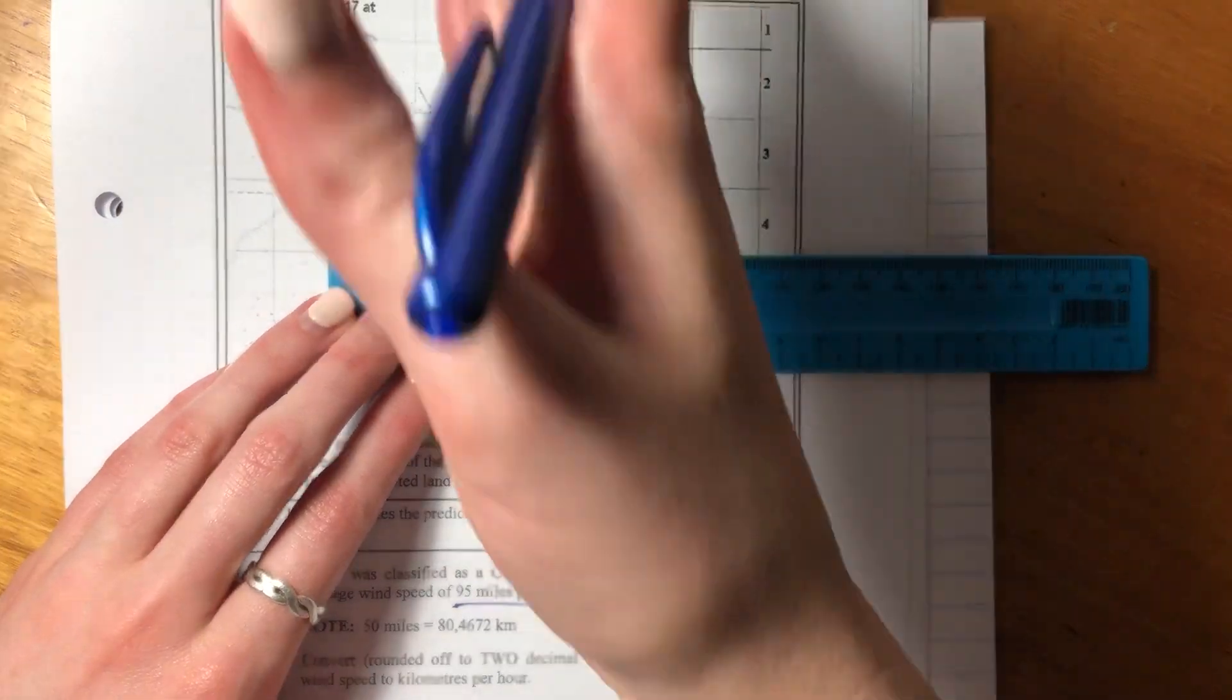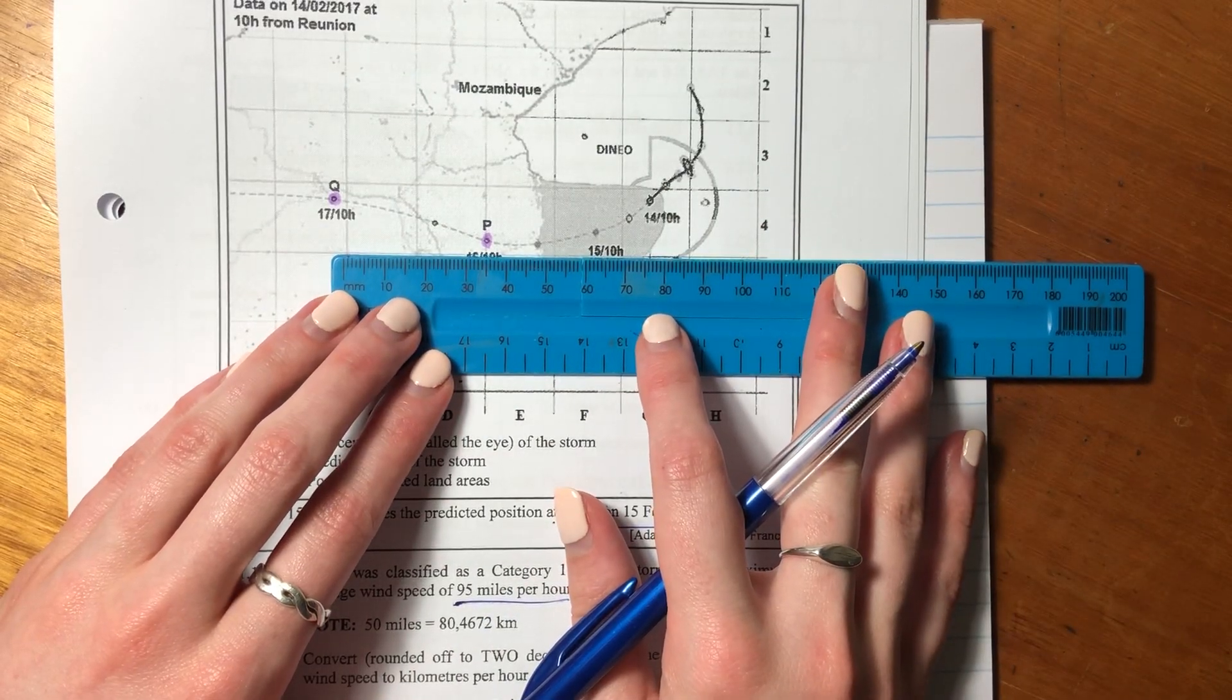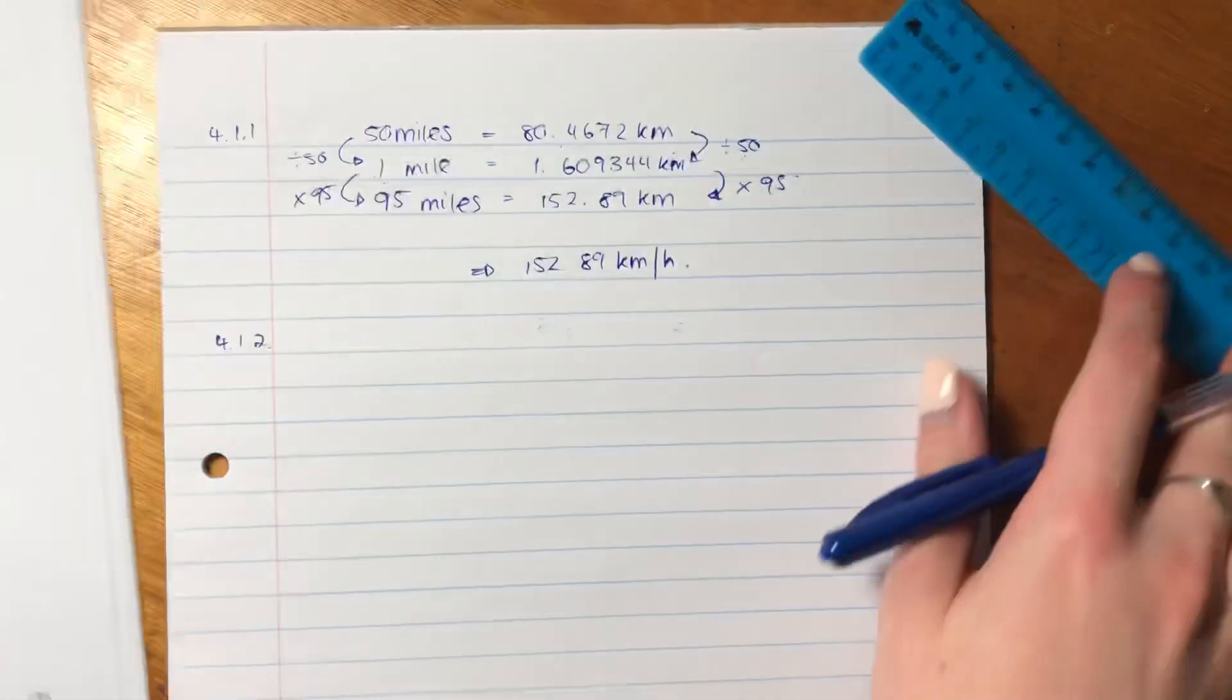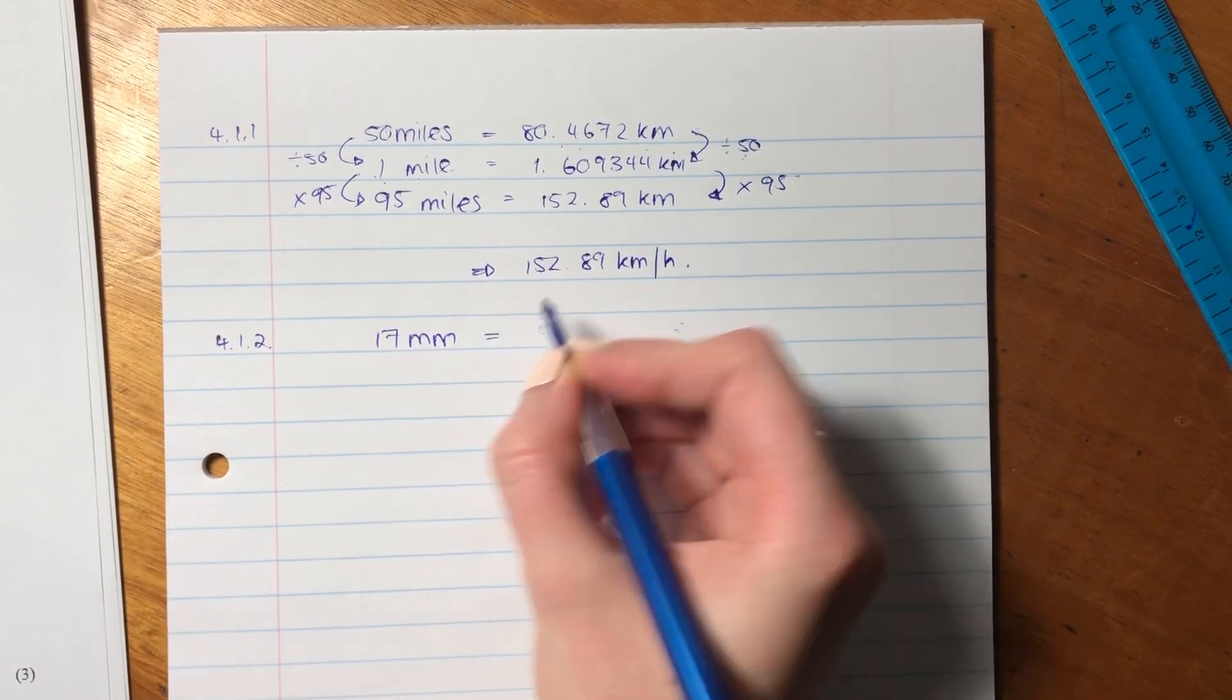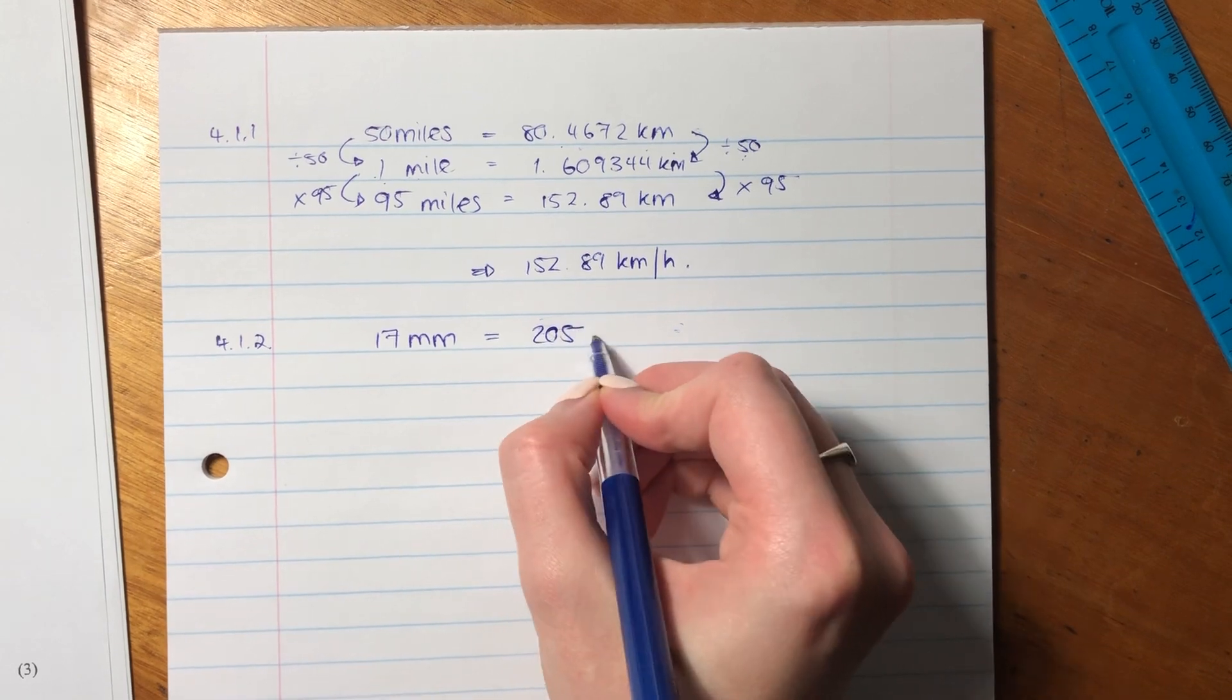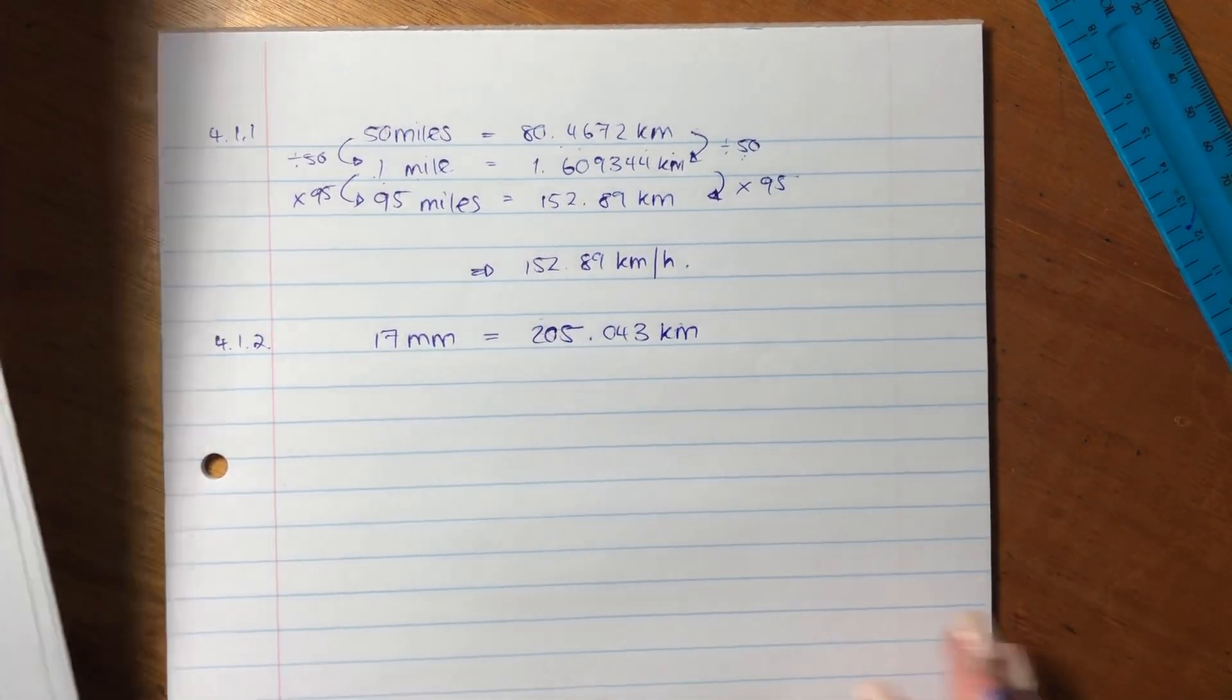So firstly, what we're going to do is we're going to figure out what the scale is. So it says that the distance between two vertical grid lines represents this distance in reality. So let's first measure the distance between two grid lines. Vertical grid lines means going this way. So I see that as 17.